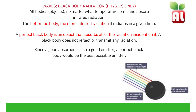Black body radiation. All bodies, or objects, no matter what temperature, emit and absorb infrared radiation. The hotter the body, the more infrared radiation it radiates in a given time. A perfect black body is an object that absorbs all of the radiation incident on it; a black body does not reflect or transmit any radiation. Since a good absorber is also a good emitter, a perfect black body would be the best possible emitter. If radiation of any possible wavelength is shone onto a perfect black body, all wavelengths are absorbed and no wavelengths are reflected or transmitted.